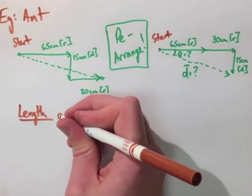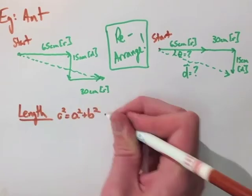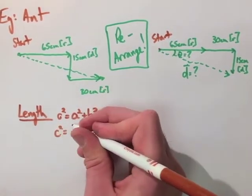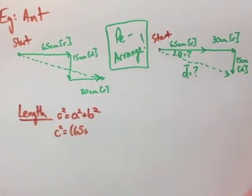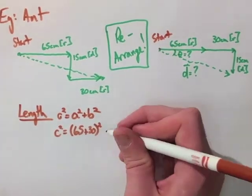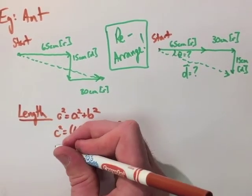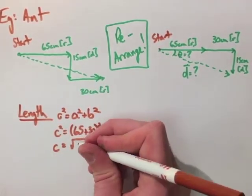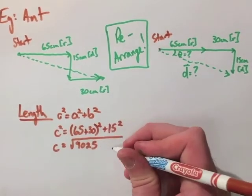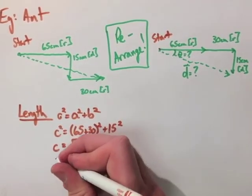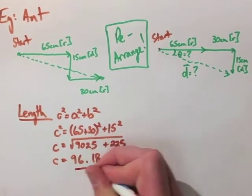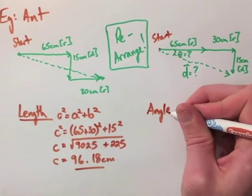When we're doing that, we're going to use C squared equals A squared plus B squared. Sub in our values, but we have to add our two vectors together. So we get 65 plus 30 squared plus 15 squared. Then we square root all those values to find out what C is ending up to be equal to. And we find that it's 96.18 centimeters that the ant has walked.